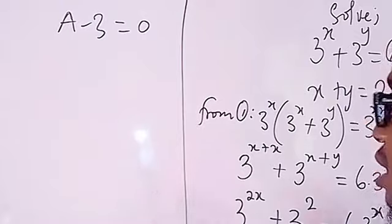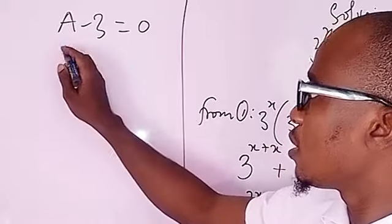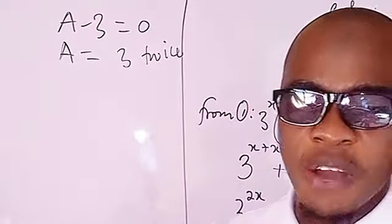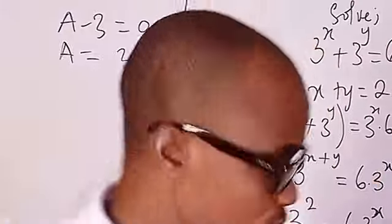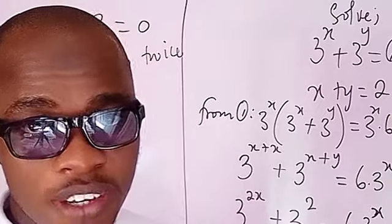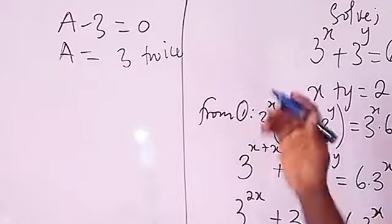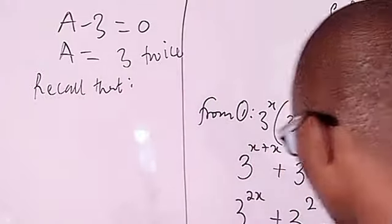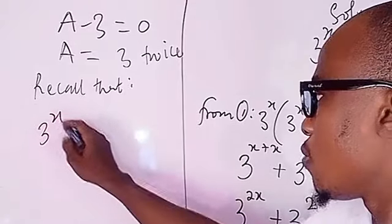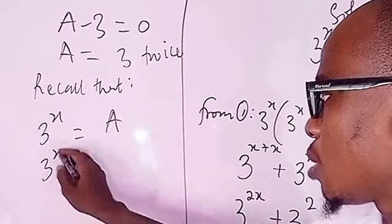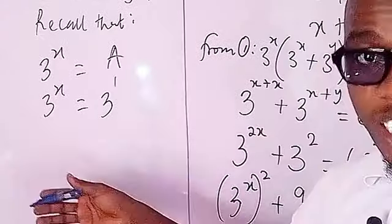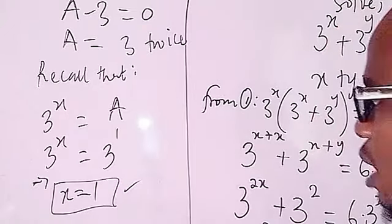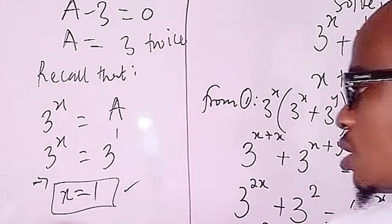So a equals three — a repeated root, three twice. But please don't stop here, because a is not the main variable we are looking for. We introduced a as a substitution. Recalling that three to the power of x equals a, and a equals three, we have three to the power of x equals three, which equals three to the power of one. That implies x equals one.